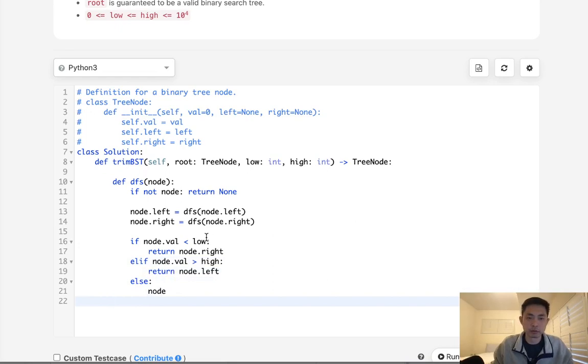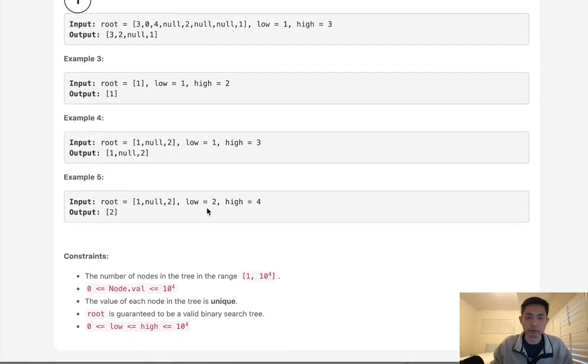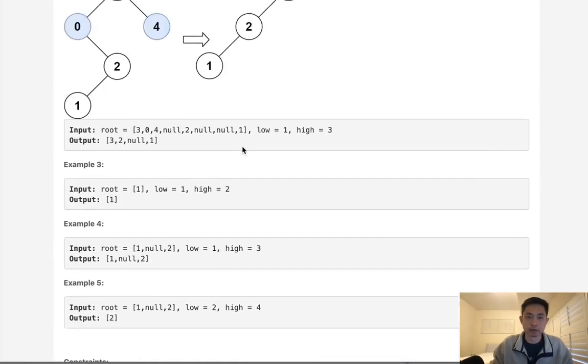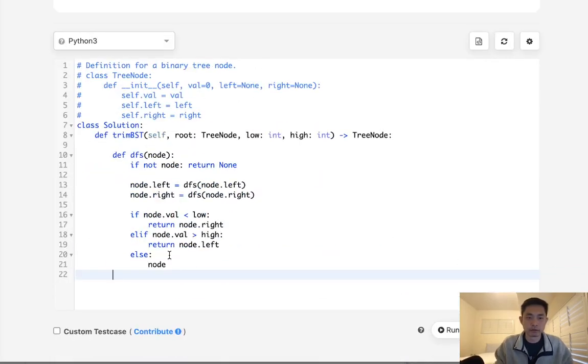And this should take care of the restructuring of the tree while we're traversing it. So finally, we just need to return whatever gets returned here, the root.